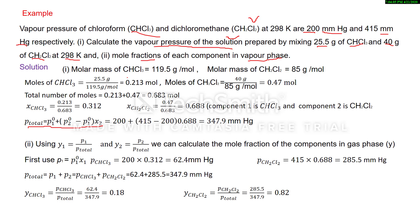Molar mass of CHCl3 = 119.5 g/mol, and molar mass of CH2Cl2 = 85 g/mol. Number of moles of CHCl3 = 25.5 / 119.5 = 0.213 mol. Number of moles of CH2Cl2 = 40 / 85 = 0.47 mol. Total number of moles = 0.213 + 0.47 = 0.683 mol.